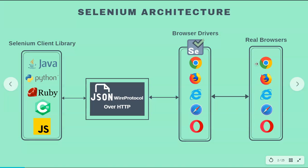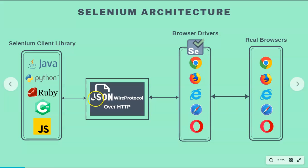If the Chrome driver is not able to find a web element — say the search text box defined in your script — in the real browser, an error will be returned to the Chrome driver, and from the Chrome driver it will be returned in JSON format with JSON wire protocol over HTTP to your IDE, where it will be displayed as an error. This is briefly how the Selenium architecture works.